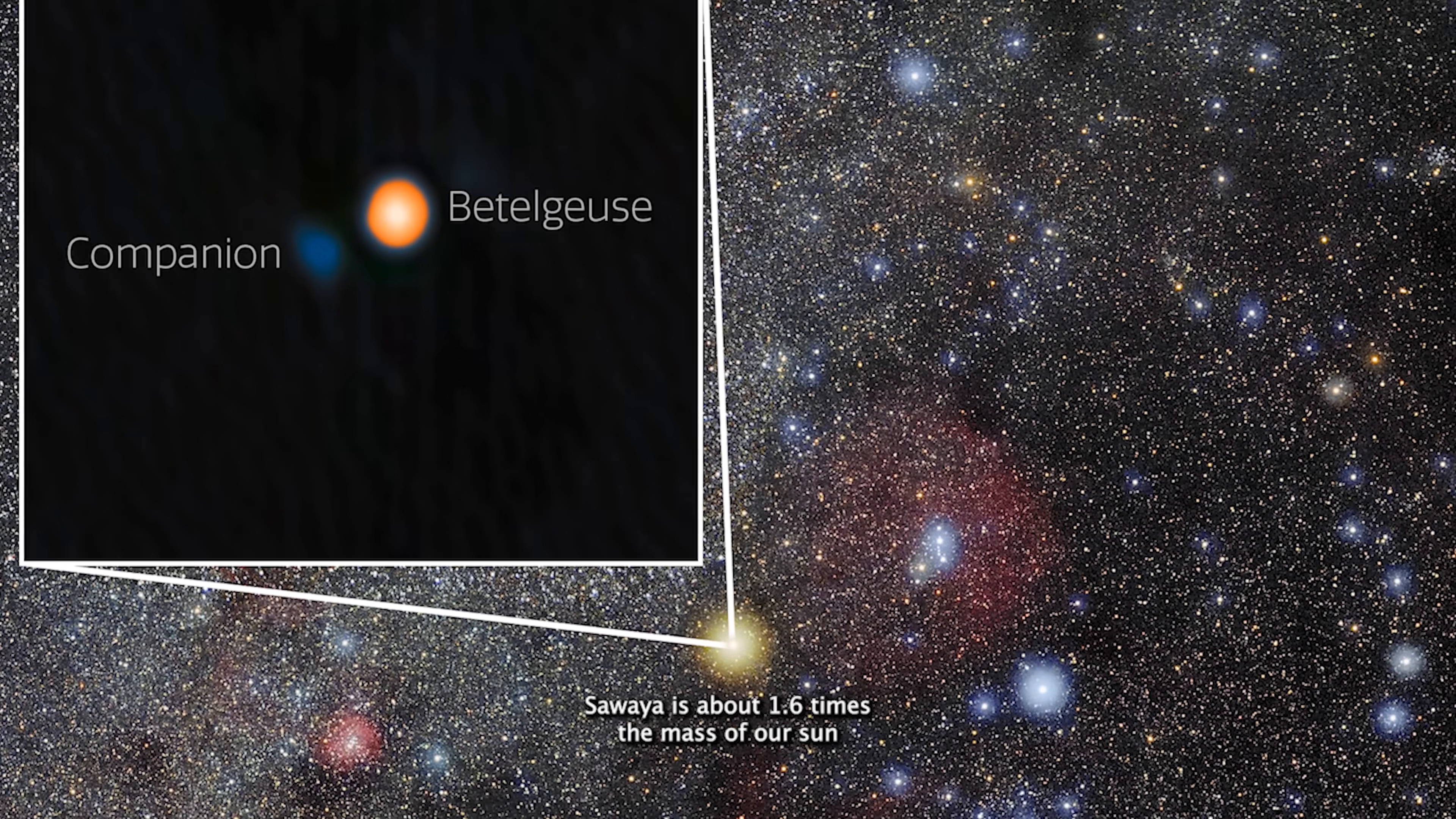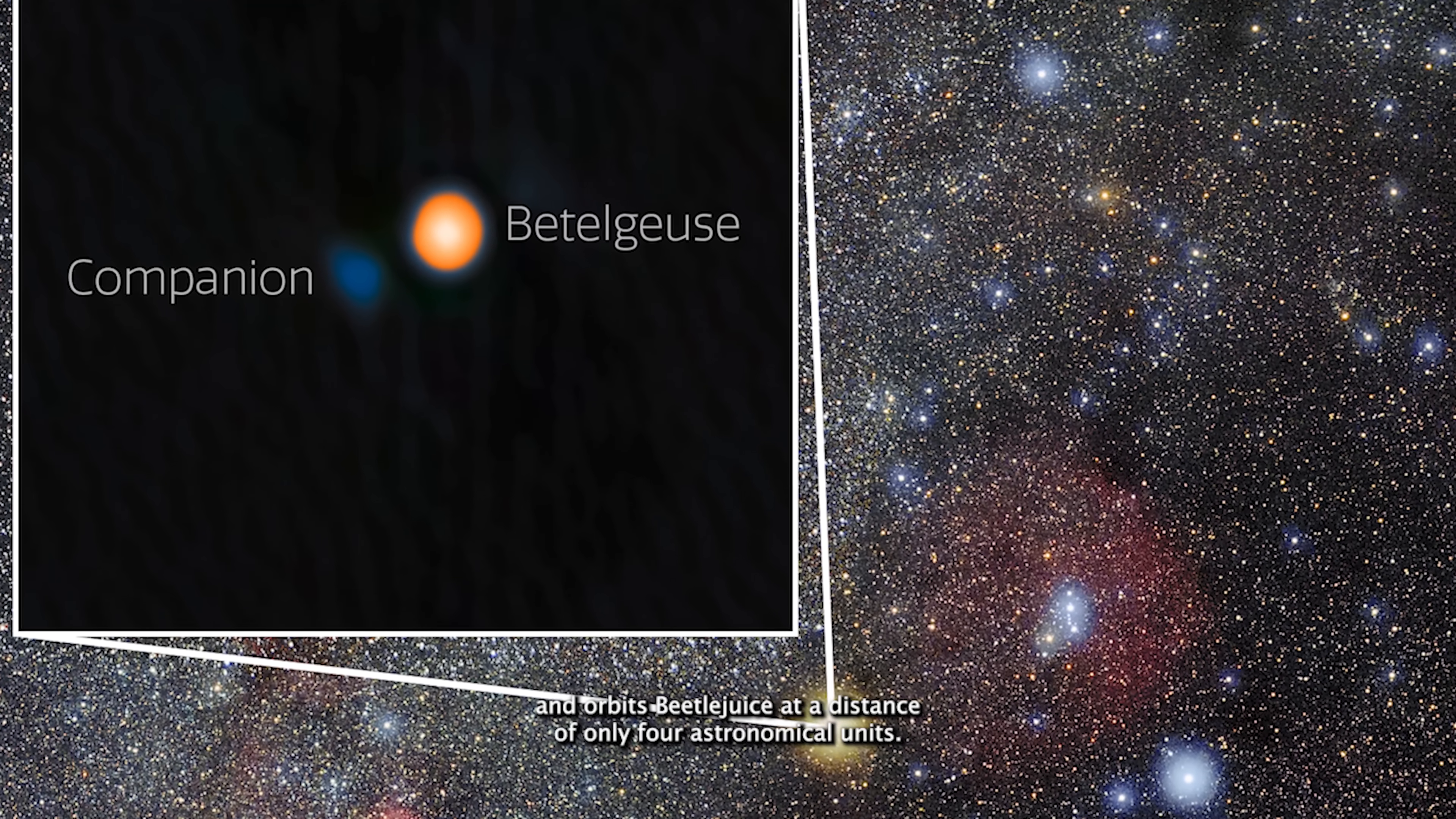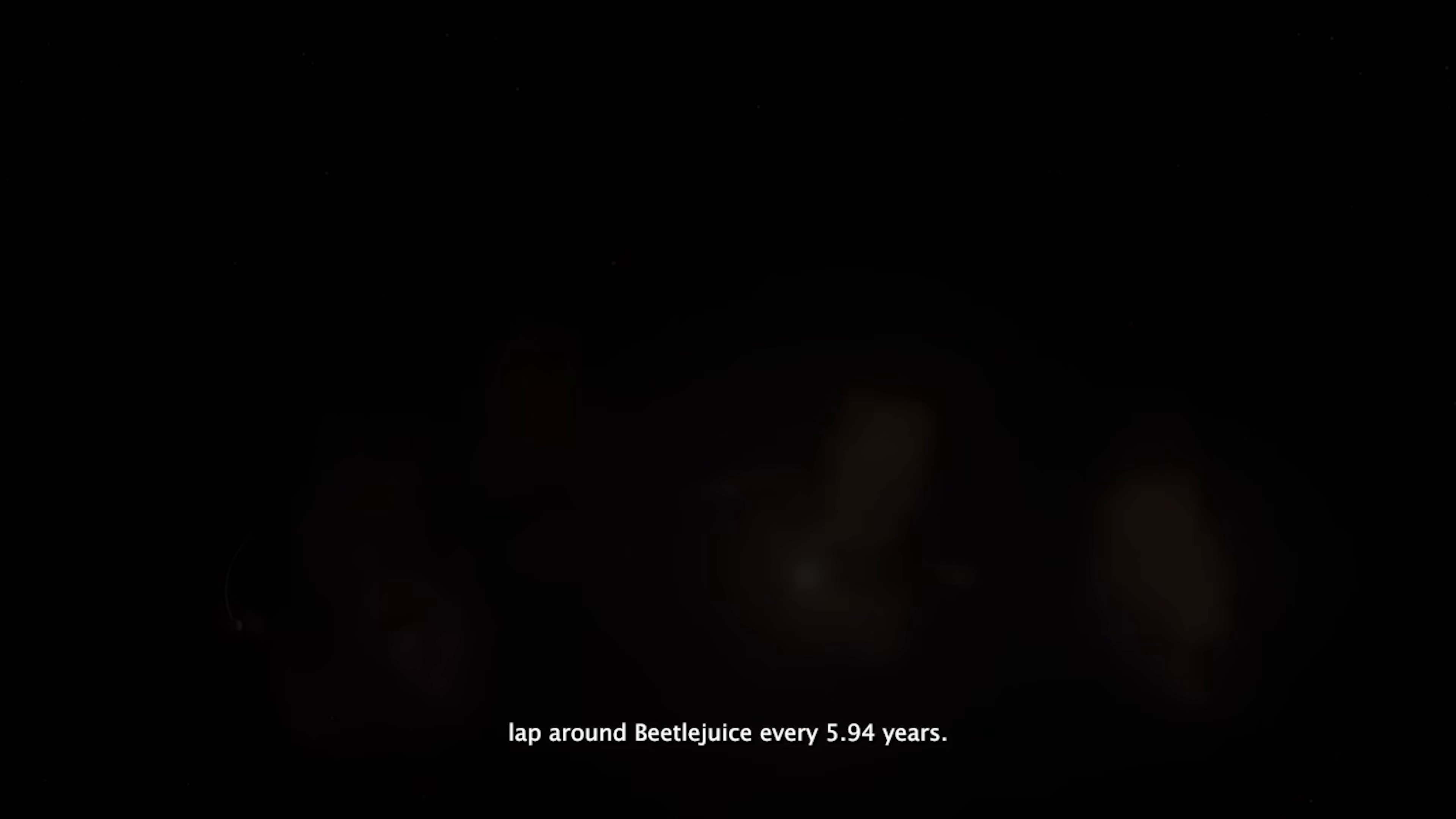Sawha is about 1.6 times the mass of our sun, and orbits Betelgeuse at a distance of only four astronomical units.